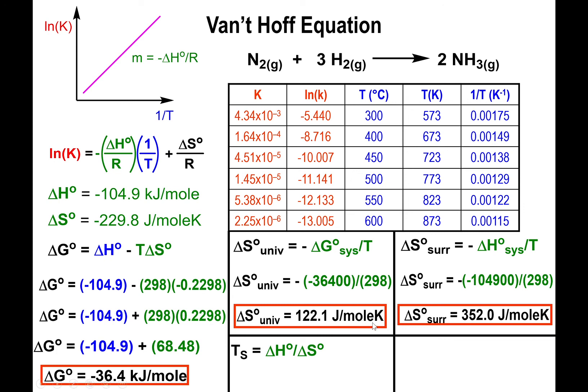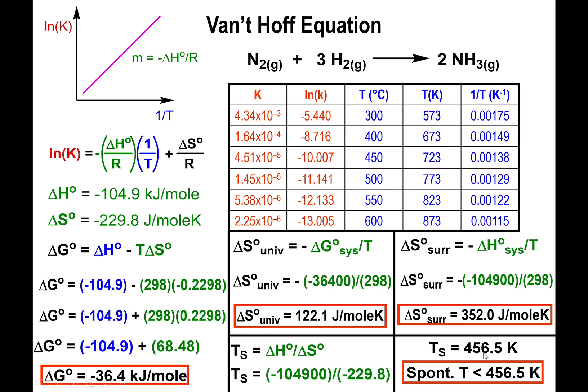Since both ΔS(system) and ΔH(system) are negative, we can find the reference temperature: ΔH over ΔS — converting ΔH to joules per mole so units match — gives a reference temperature of 456.5 K. Since enthalpy is negative, you want the temperature to be low, specifically lower than 456.5 K. The Van't Hoff plot thus gives us everything: enthalpy, entropy, free energy, entropy of the universe, system, surroundings, and the temperature range for spontaneity.